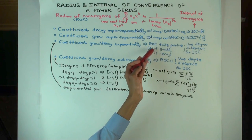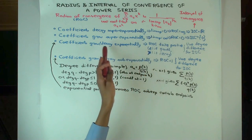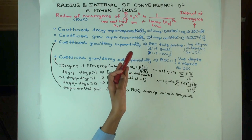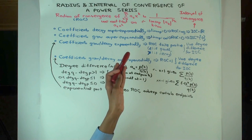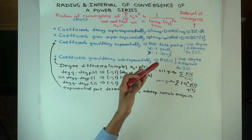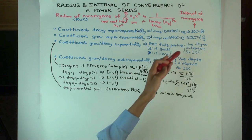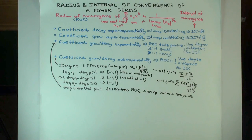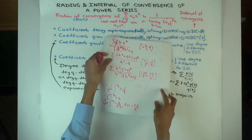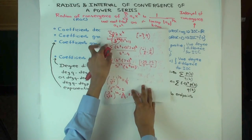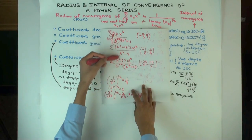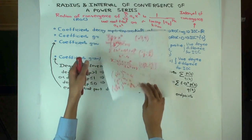When you plug in the endpoints, the exponential part doesn't matter, and figuring out whether that converges is essentially the degree difference test. We did a few examples of that — you can watch the previous video. But now we're going to do some slightly trickier examples.